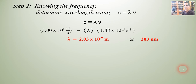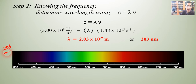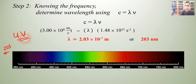What type of electromagnetic radiation is that? 200 nanometers sounds close to visible light. Comparing to the visible light spectrum, 203 nm is just to the left of visible — past violet — so it's ultraviolet. This is UV light.